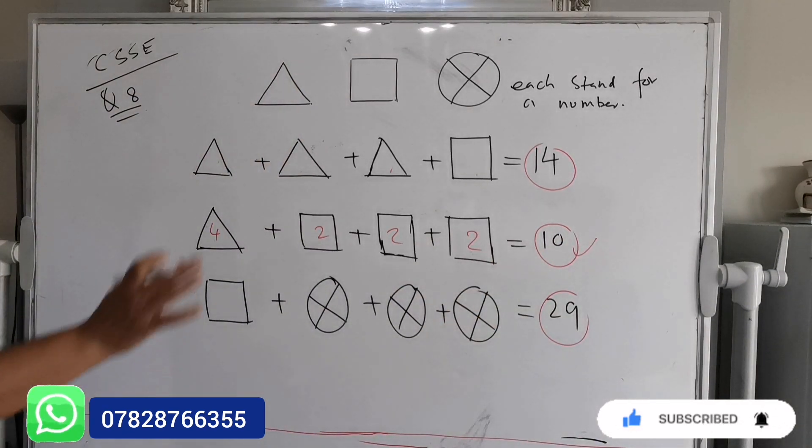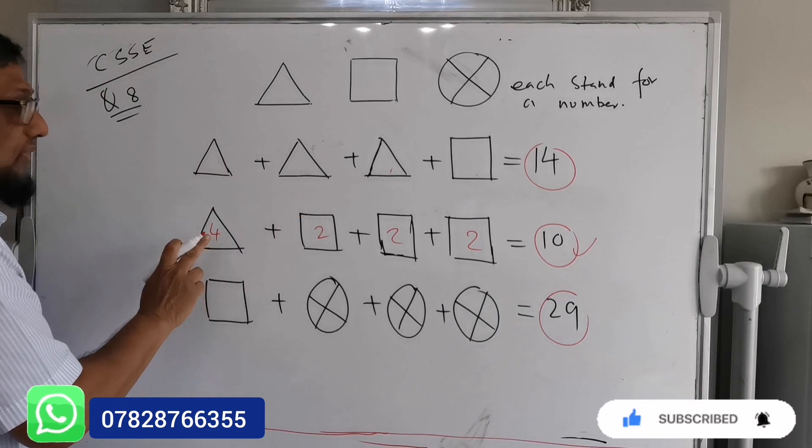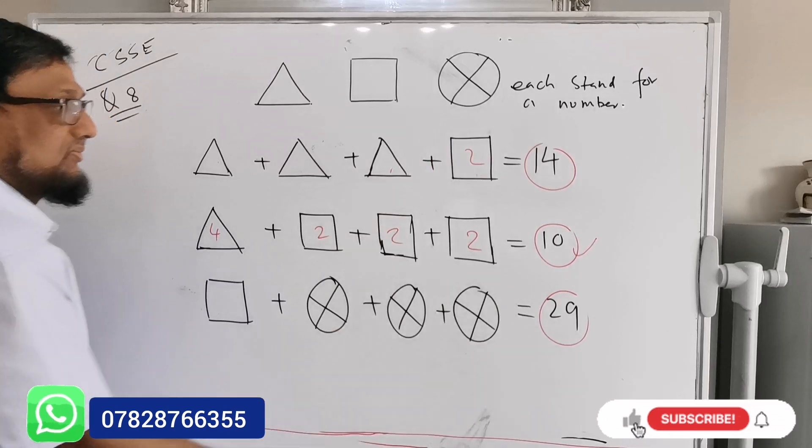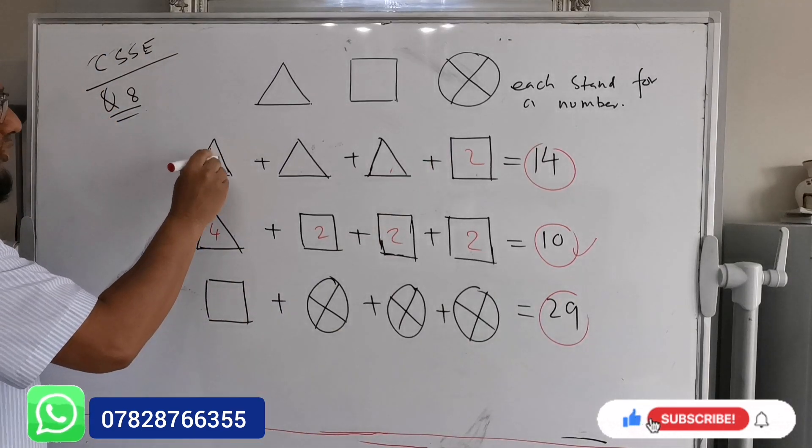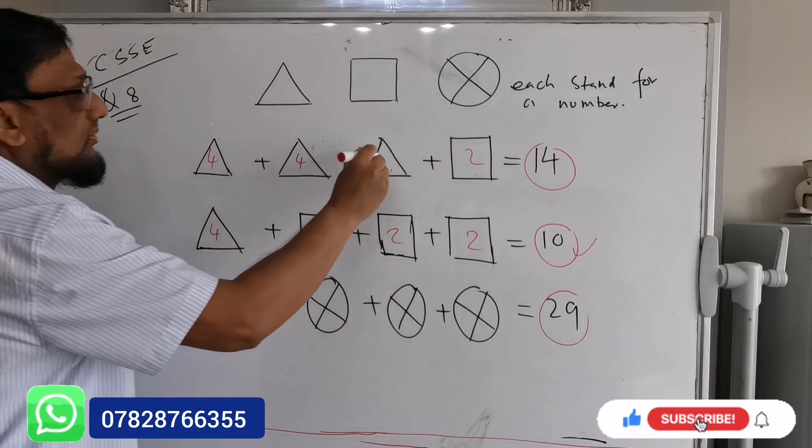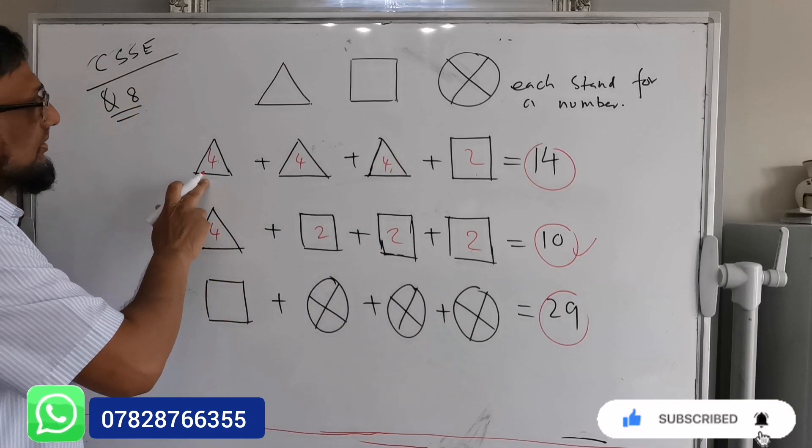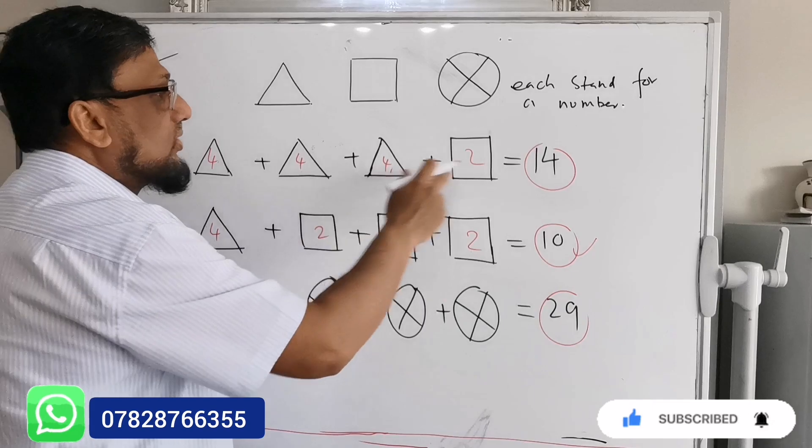If you look at this one, four plus six equals 10. The statement is correct. Now we can put it in C. If I put here two for the square, I can put here two here as well. Triangle is four, four, four, four. Look at this one: four, four, four is twelve. Twelve plus two is fourteen. Correct.